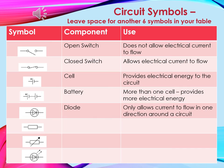This one is a little bit more difficult for some people. This is a diode. It only allows current to flow in one direction around the circuit. The arrow on that diode — the triangle — shows the direction of the flow.